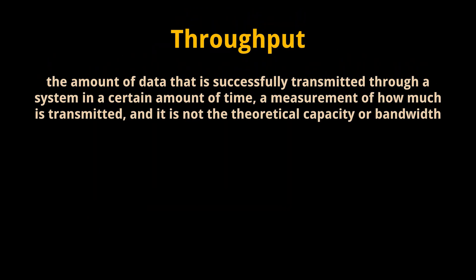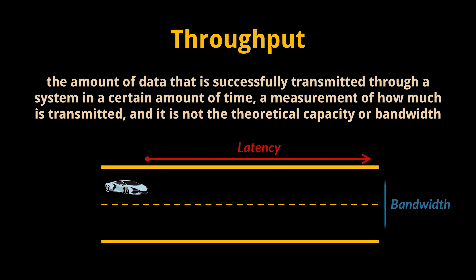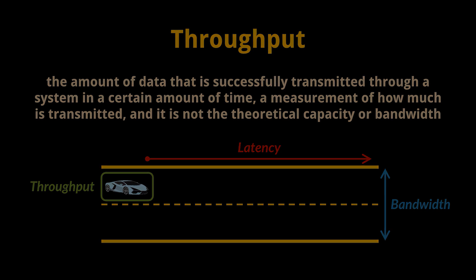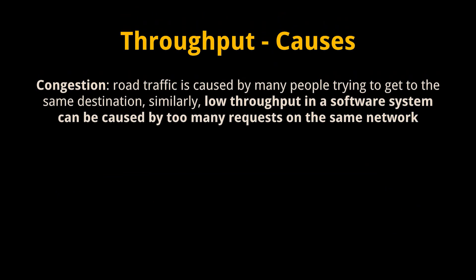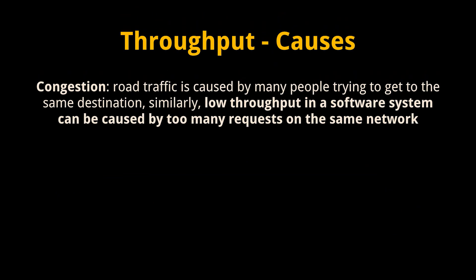The main takeaway is a basic understanding of the difference between latency, throughput, and availability. Throughput is the amount of data that is successfully transmitted through a system in a certain amount of time, measured in bits per second. Throughput is a measurement of how much is transmitted — it is not the theoretical capacity or bandwidth of the system. Latency, throughput, and bandwidth can be easily confused, but they're very similar to a system you're probably already familiar with: traffic of cars on the road.